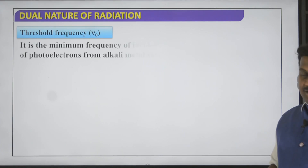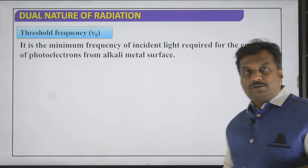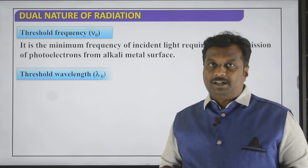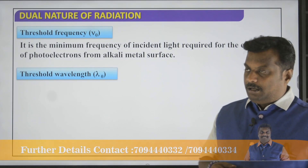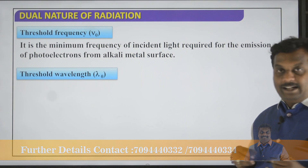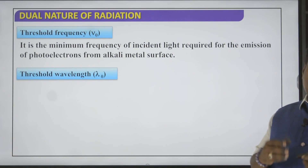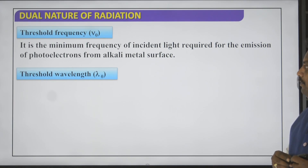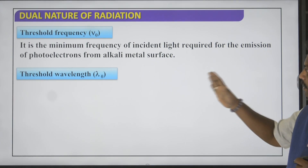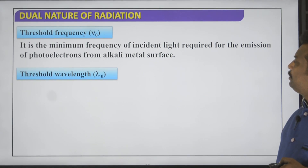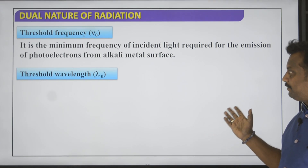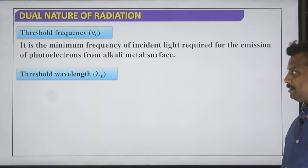What is threshold frequency? The minimum frequency with which a photon has to fall such that an electron comes out of the metal surface is called threshold frequency. Technically, it is the minimum frequency of incident light required for the emission of photoelectrons from the metal surface or alkali metal surface.